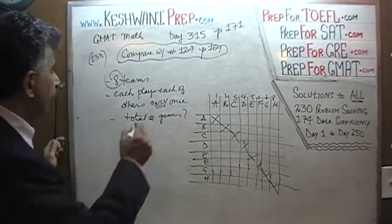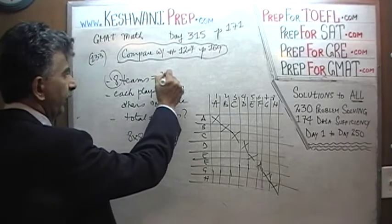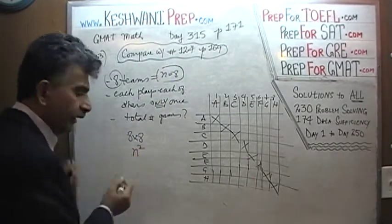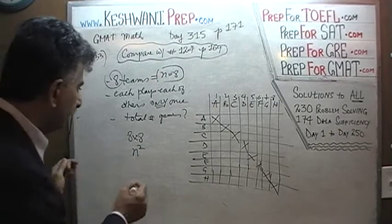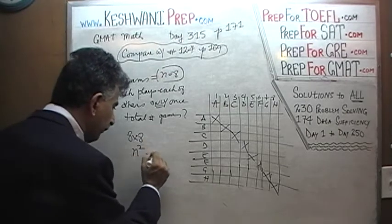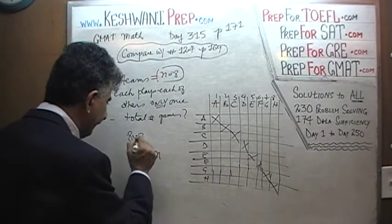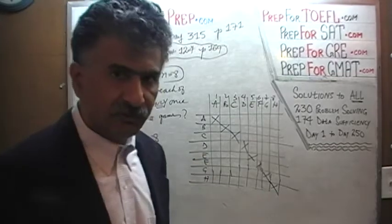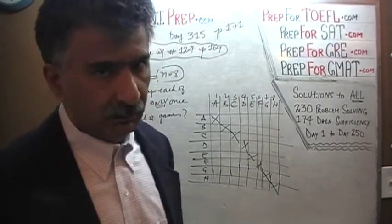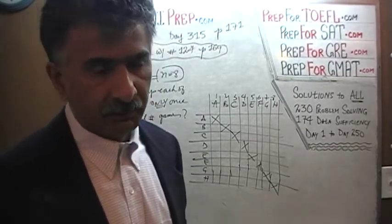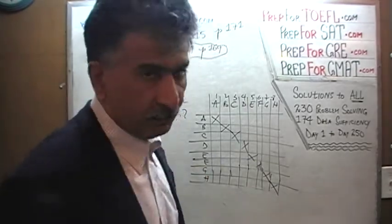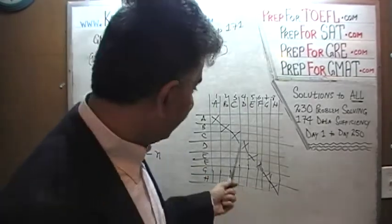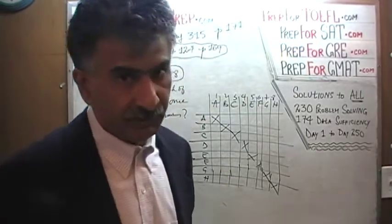Let's call this N number of teams, where N equals 8. So it is not N squared, but it is N squared minus N — it's 8 times 8 minus 8. Because all 8 entries in the diagonal do not count. Team A is not going to play itself, team B is not going to play team B, and so on. Each of the diagonals are going to remain empty.